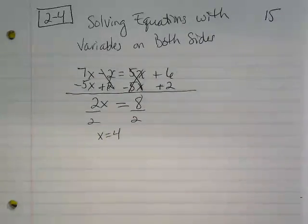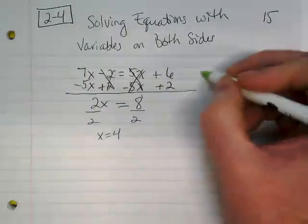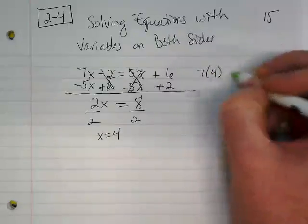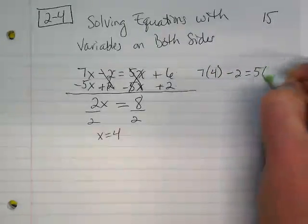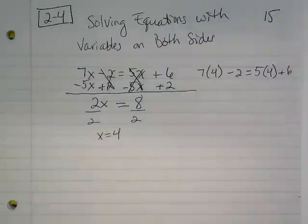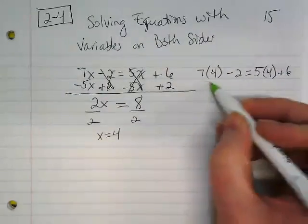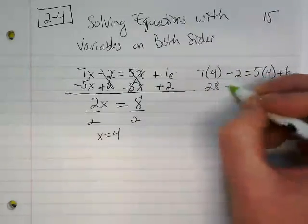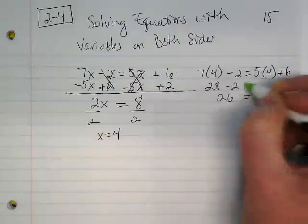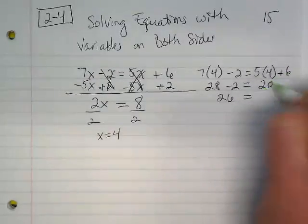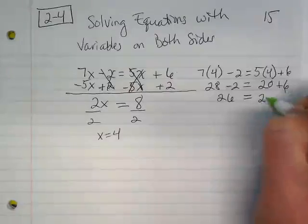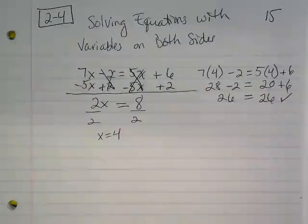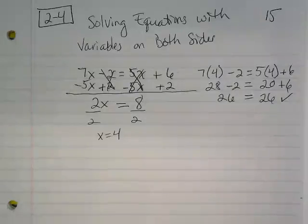Okay? I can check this by going in and putting the 4 in wherever there was an x. 7 times 4 minus 2 is equal to 5 times 4 plus 6. 7 times 4 is 28. Minus 2 gives me 26. 5 times 4 is 20 plus 6 also gives me 26. So, to check these, you have to go back wherever there was an x or the variable and plug that number in wherever that is in the equation.